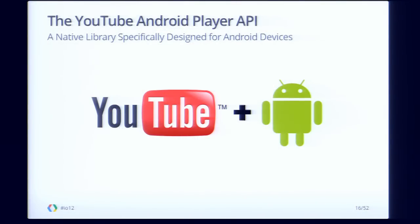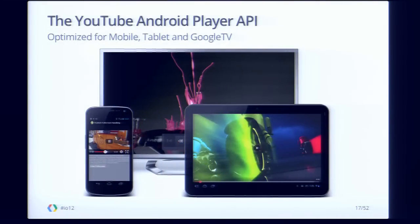This is why we're creating the YouTube Android Player API — it's a native library specifically designed for Android devices. It actually makes use of a lot of the same code that's used by the native Android YouTube Player, so you take advantage of all the development that's gone into that player automatically. It's been optimized for the full range of devices that run Android: mobile phones, tablets, and Google TV devices. For example, on Google TV we have a different controller scheme using keyboard-based remote controls rather than a touch-based interface.